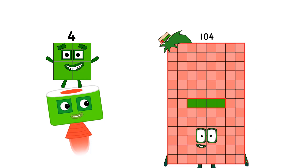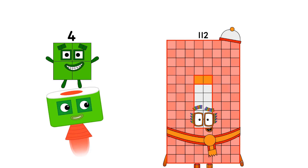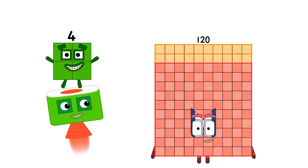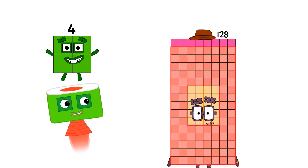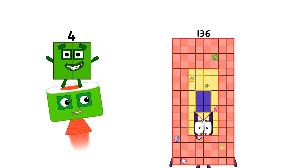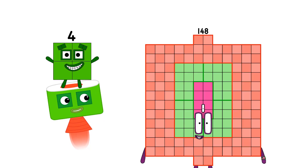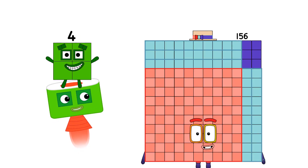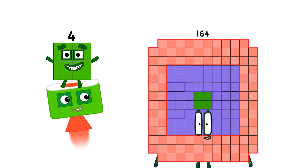1 four is 4, 2 fours are 8, 3 fours are 12 — we know how to tell it straight. 4 fours are 16, 5 fours are 20, 6 fours are 24, 7 fours are 28, 8 fours are 32, 9 fours are 36, and when all the 4's are in the mix, 10 fours are 40.